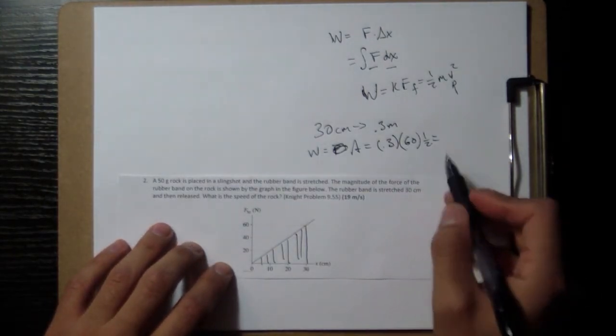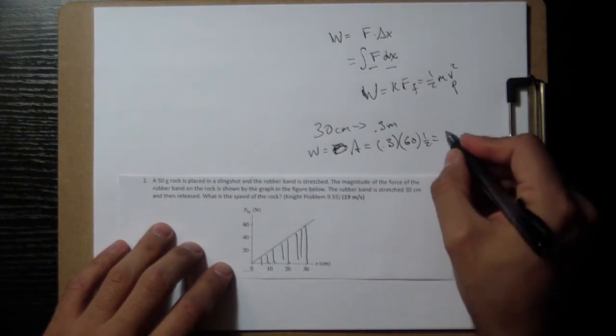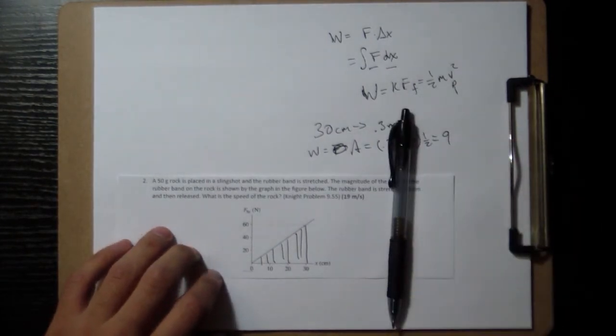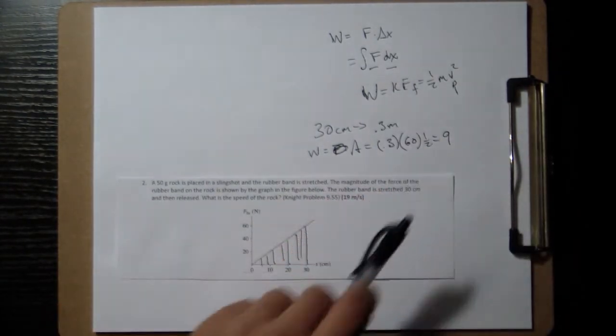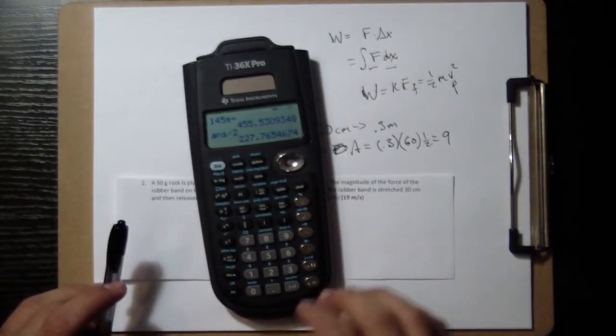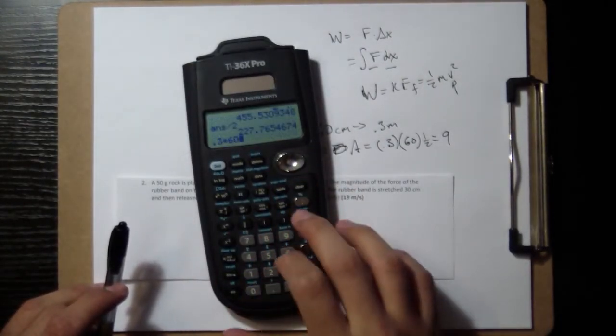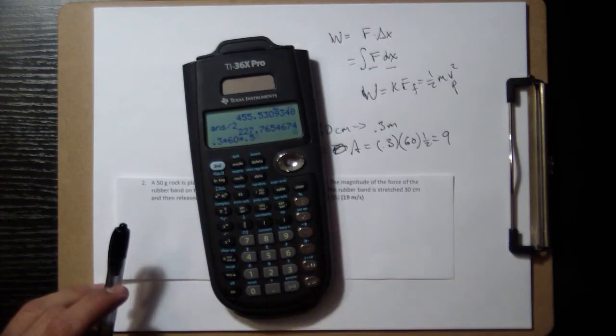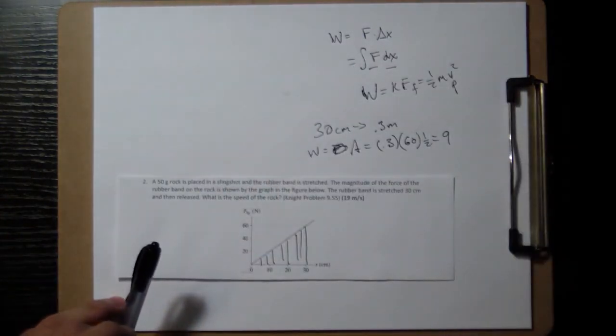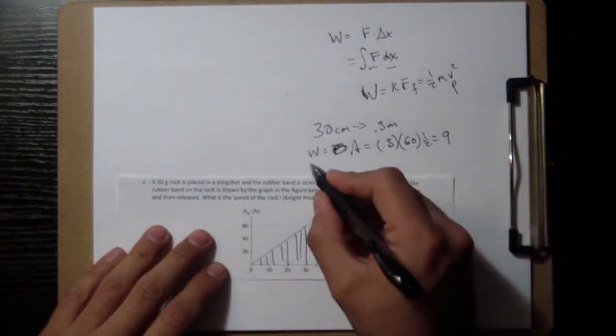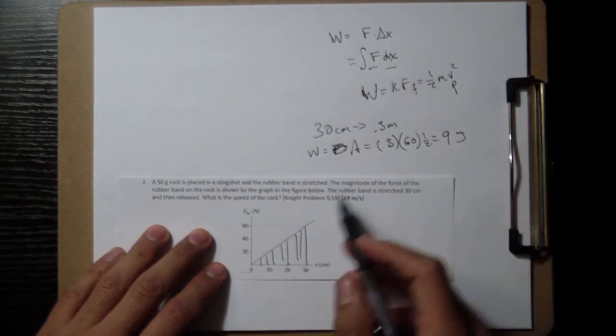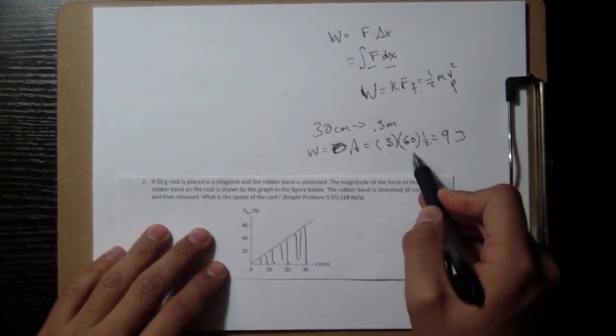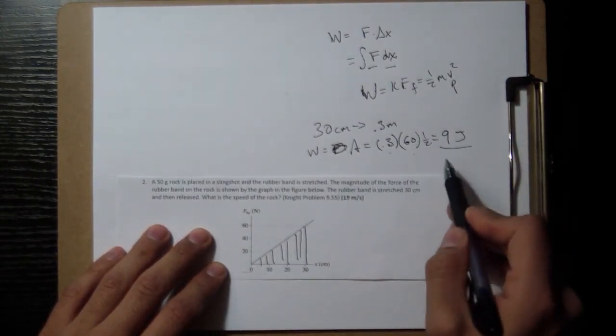And that's going to be 0.3 times 30, which should be 9. 0.3 times 60 times 1/2 gives you 9. So that's going to be how much work we do. Remember, work is in joules. Now that we have everything in meters and in newtons, everything is in SI units. This comes out in joules.